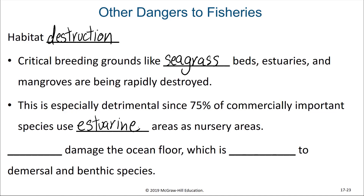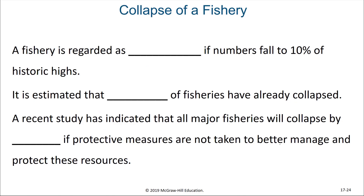Bottom trawling can damage the ocean floor, which is detrimental to demersal and benthic species. A fishery is regarded as collapsed if numbers fall to 10% of their historic highs, and it is estimated that one-third of fisheries have already collapsed.